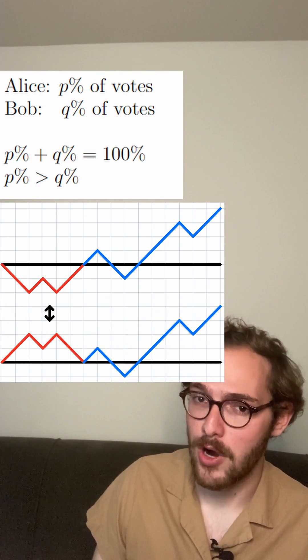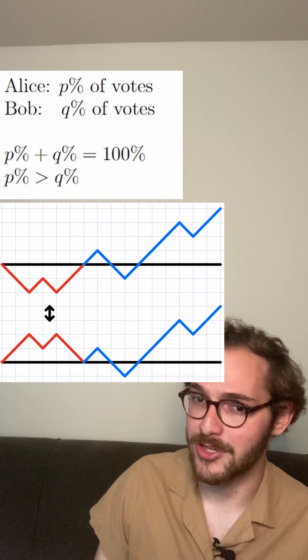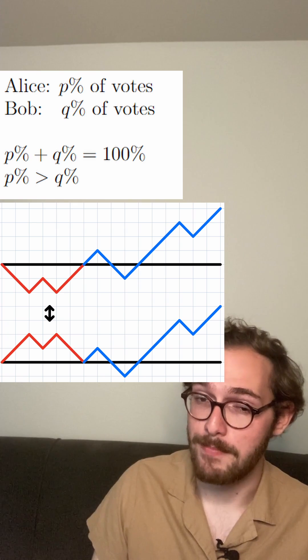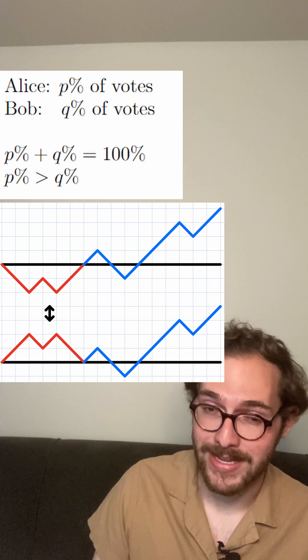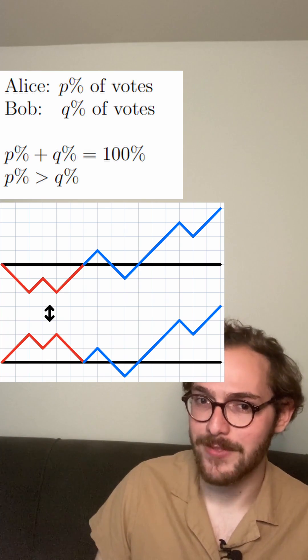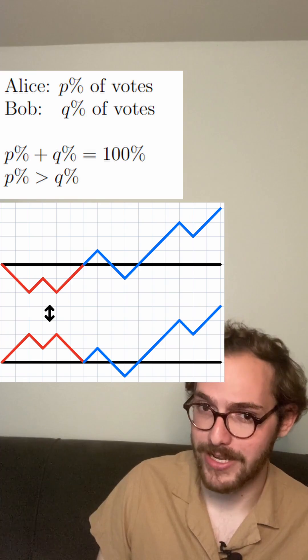For every bad path, take the part up until the first time it touches the x-axis and flip it. This process matches up bad paths that start with Alice winning and bad paths that start with Bob winning. So exactly half the bad paths start with Bob winning.